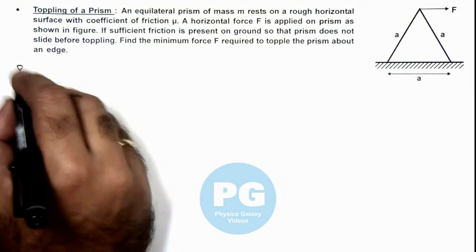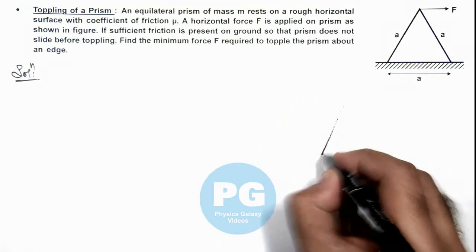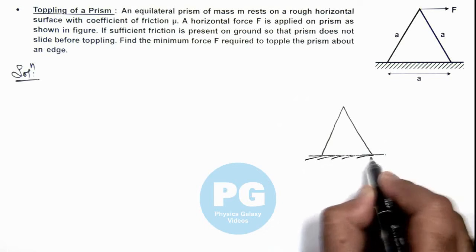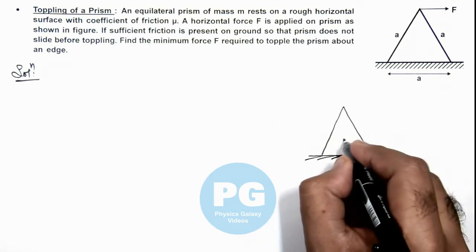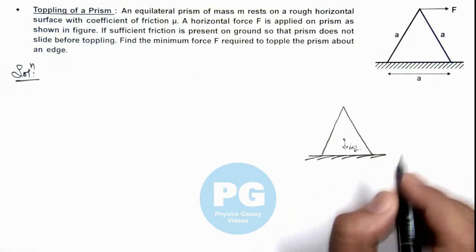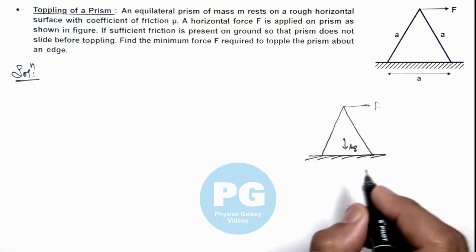So here first we draw the free body diagram of this prism on the surface. Here, at the center, the weight of the prism would be acting. And at the top, the rightward force F is there.